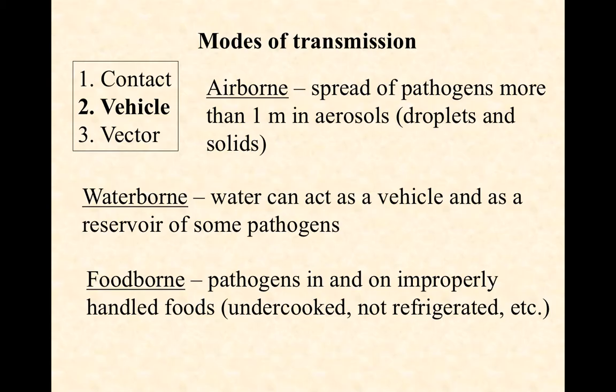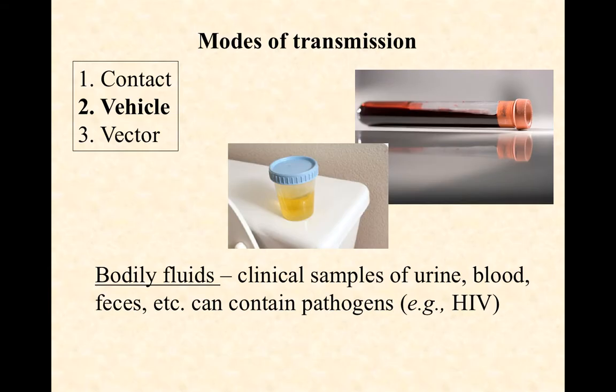One more vehicle worth mentioning: body fluids. For those who work in a clinic, if you consider body fluids a vehicle — which is a wise way to think about it — transporting urine or blood samples carries potential to transmit pathogens if mishandled, such as if someone trips and spills a sample. So body fluids can be considered an alternative vehicle of transmission.